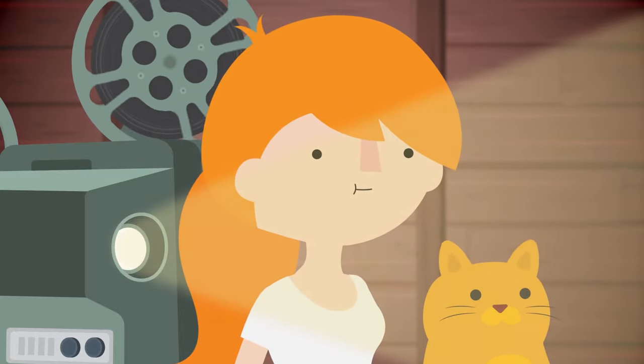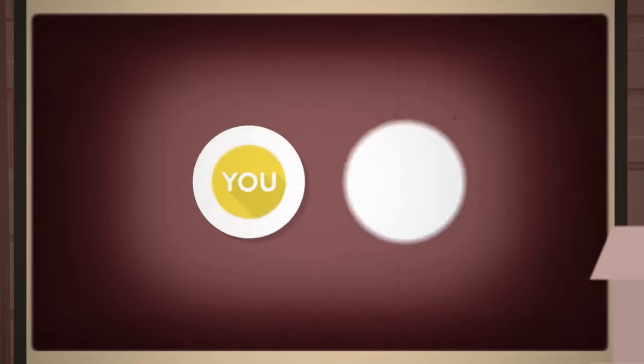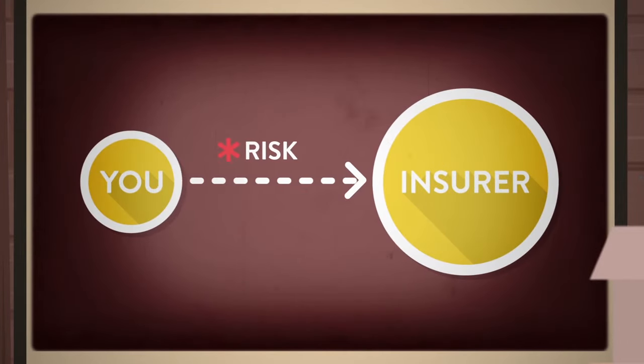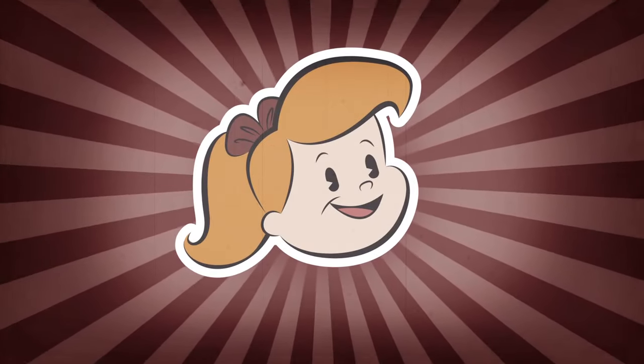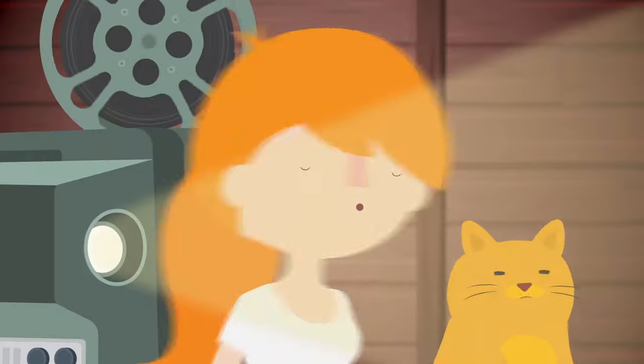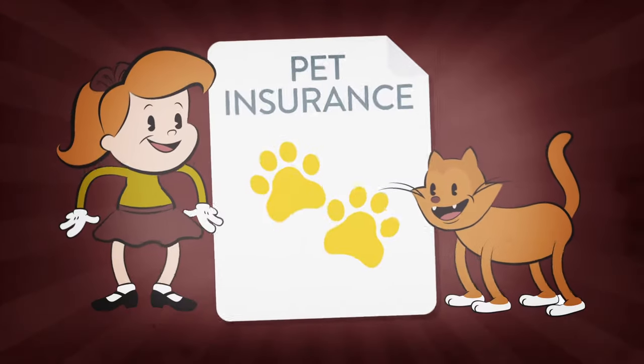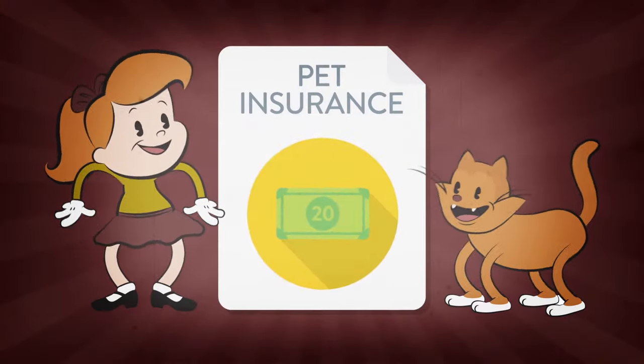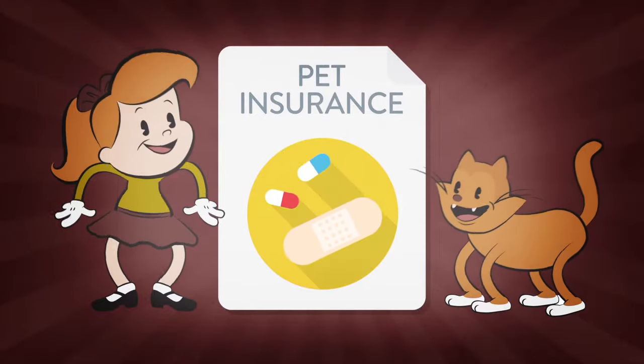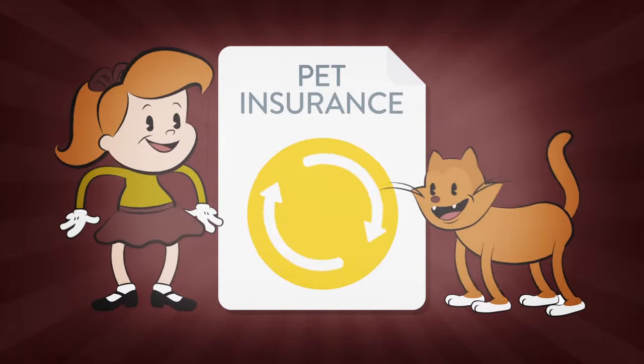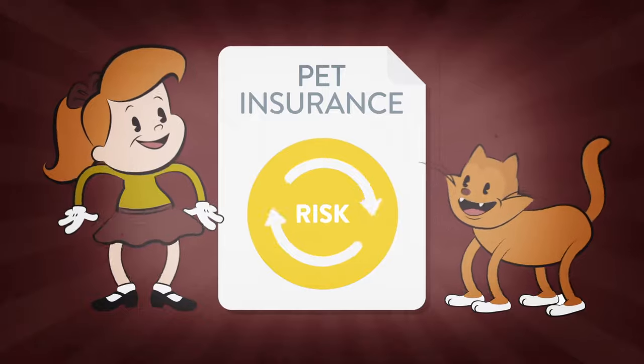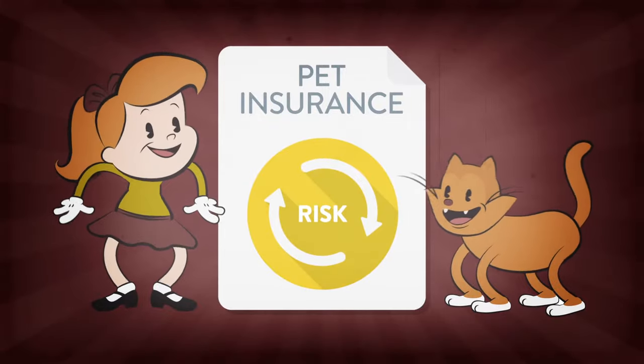By taking out an insurance policy, you are actually paying the insurer to assume your financial risk in the situation specified in your contract. Take Little Jenny here and her darling pet cat. Little Jenny pays $20 a month to have her furry friend insured against accidents and illnesses, thus transferring her personal financial risk should her cat need medical attention.